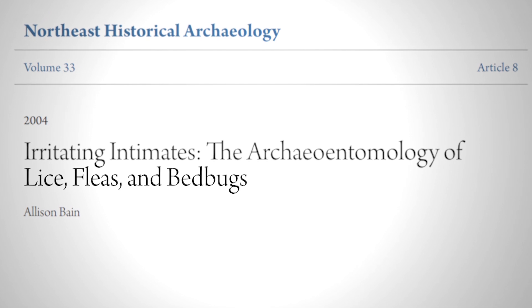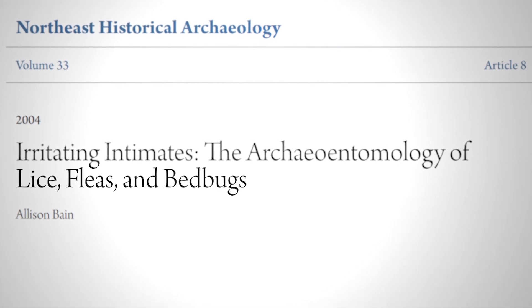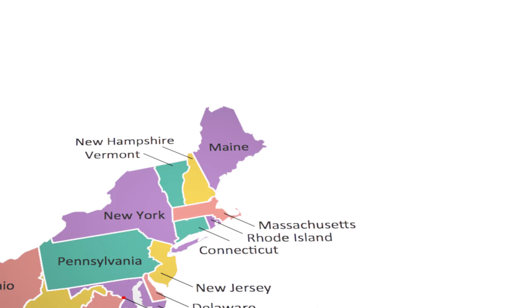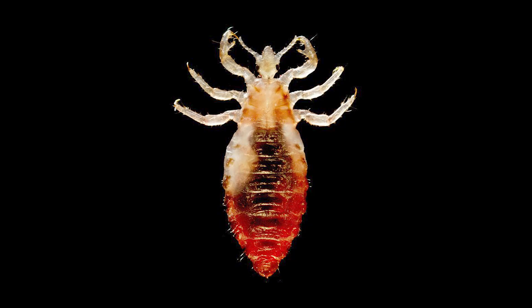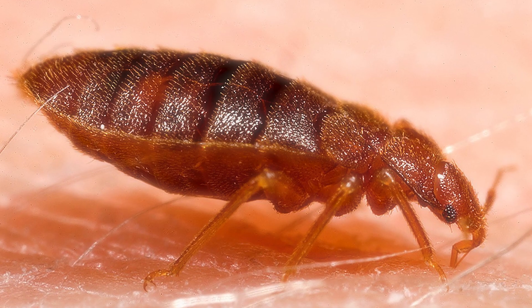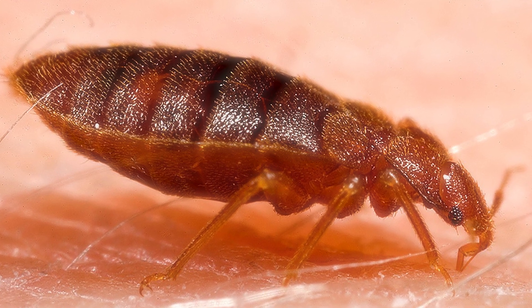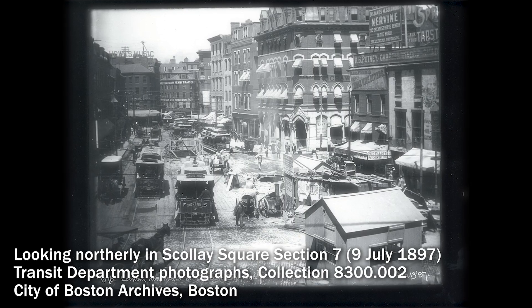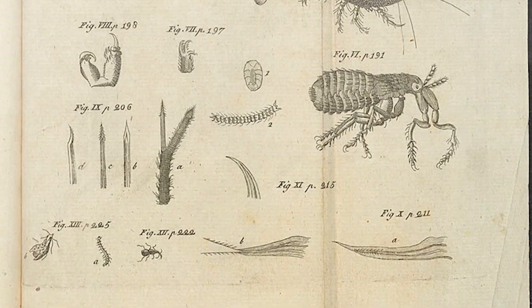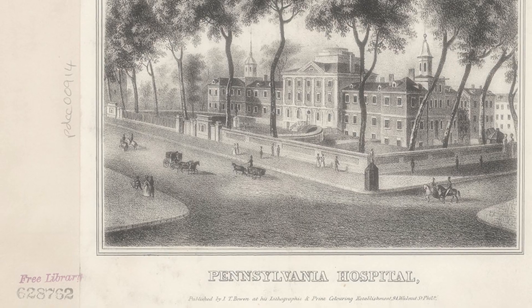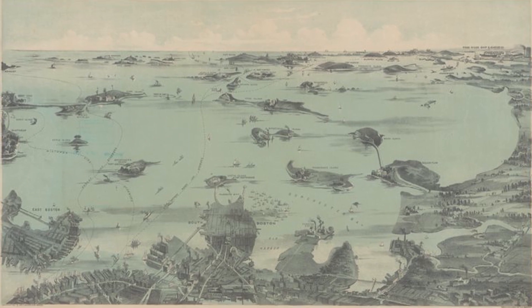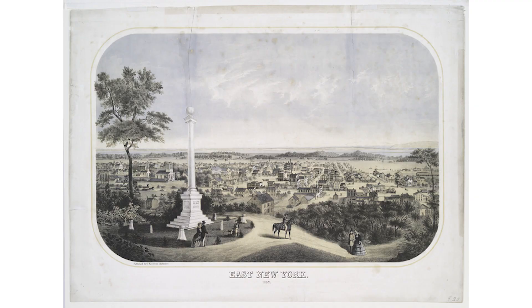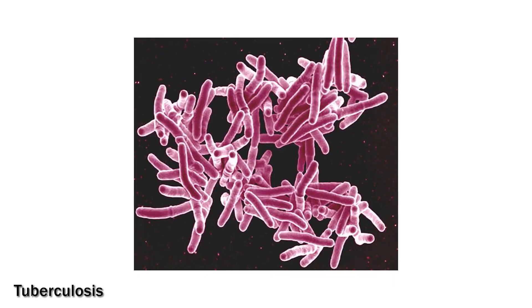Ectoparasites were extremely common in the past and were present in almost every human community. For example, archaeologists working at a site in Boston found evidence of lice and other insects, including bed bugs, in historic outhouses dating to the mid-1800s. In 19th century cities, nearly everyone had fleas and or lice. As a result, typhus — a bacterial infection spread by fleas, lice, and a few other ectoparasites — was rampant across New England, alongside a host of other infectious diseases like smallpox, tuberculosis, and syphilis.